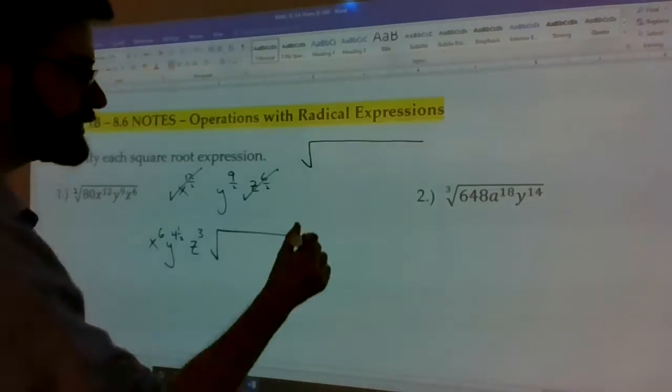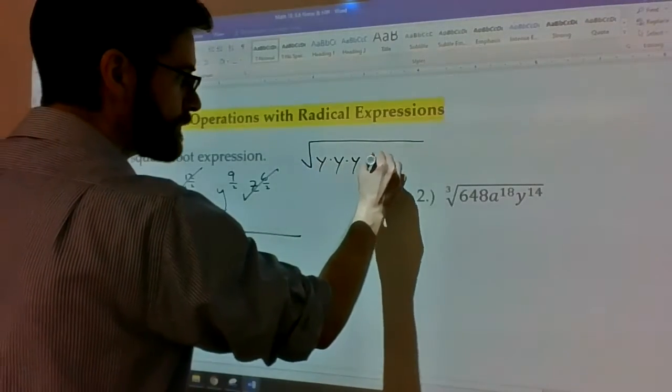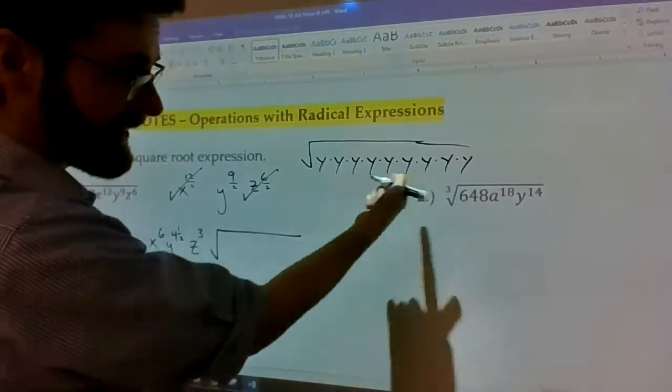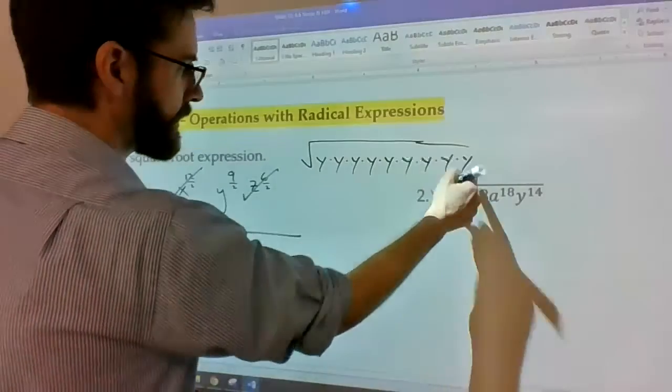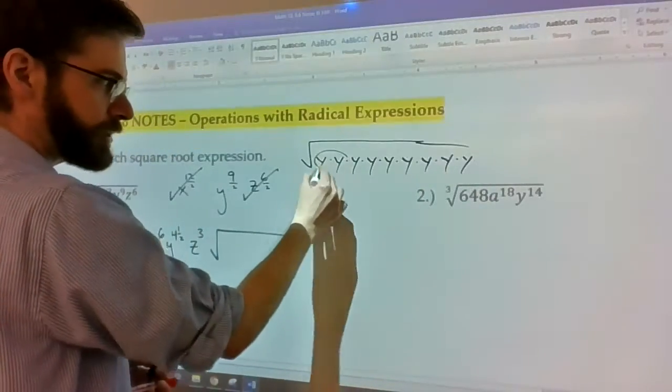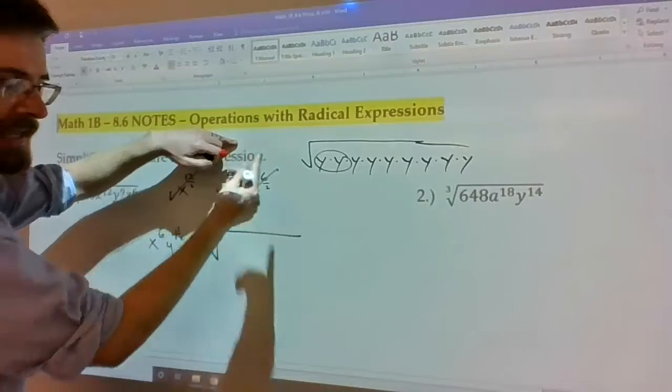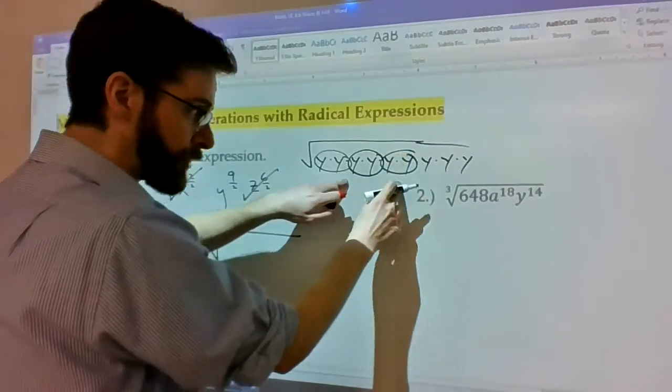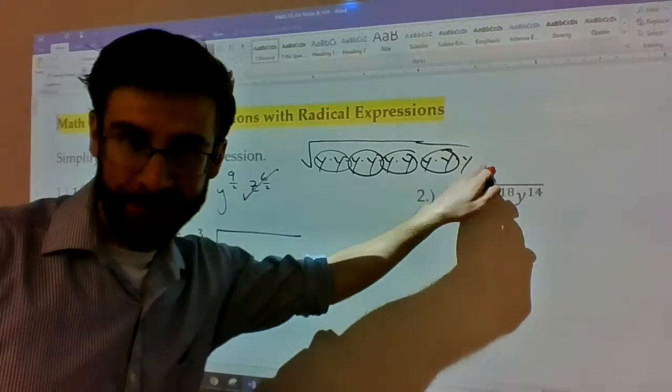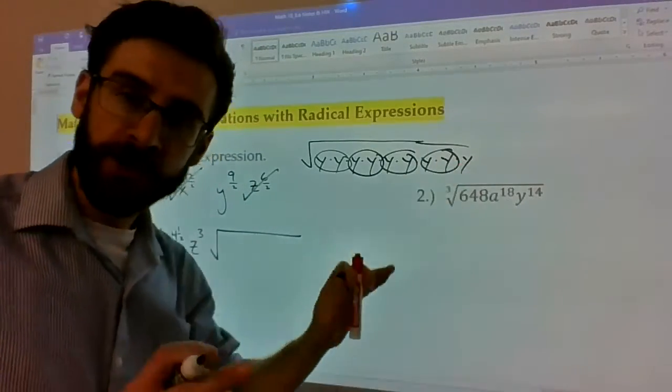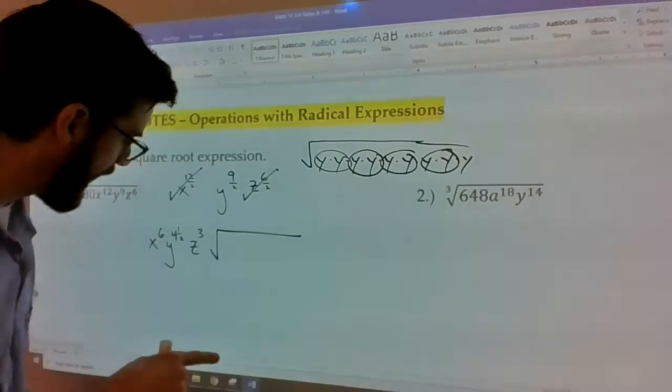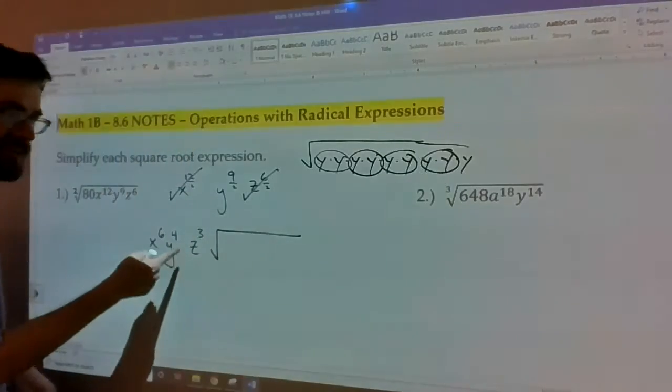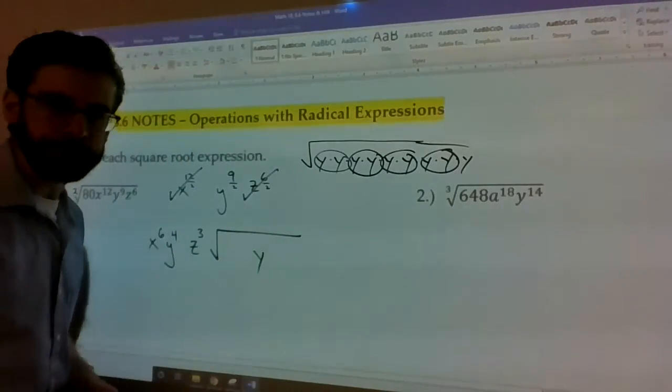there are 9 y's inside of that square root. So what I could do is just expand it, so that's the same as y to the 9th power, right? And then taking pairs out means that one y is outside. So y to the 1, y to the 2, y to the 3, y to the 4, with one y left over inside of the root. So instead of writing y to the 4.5 power, you say it's y to the 1, 2, 3, 4 outside with one y left over inside.